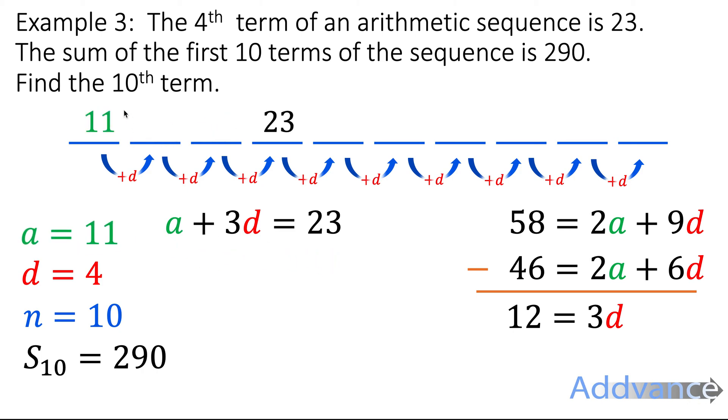I can replace the A with 11 up here. And all I have to do to find the 10th term is just keep adding the common difference to it until I get to the 10th term over here. Just like this. And I can fill out the expression like that. And I get that the 10th term is 47. That is the final answer.